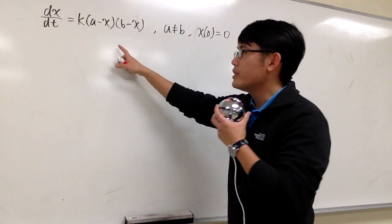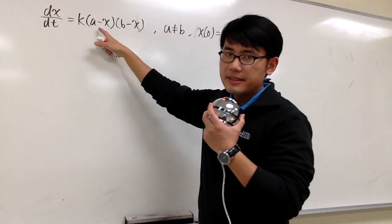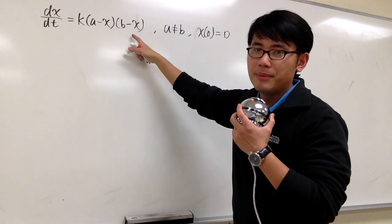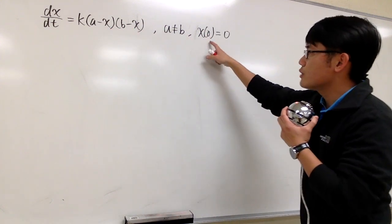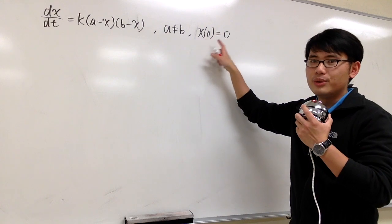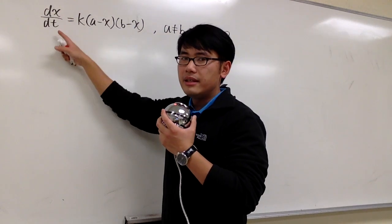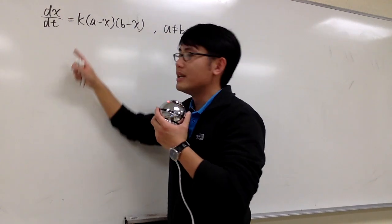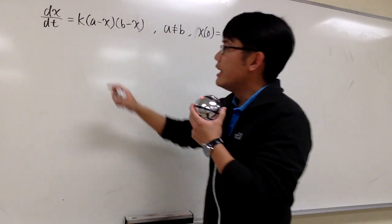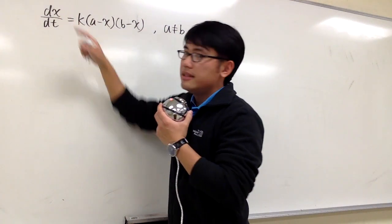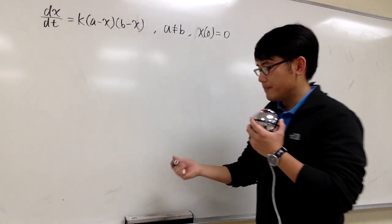We are going to solve this differential equation. We have dx/dt equals k times (a minus x) times (b minus x), where a and b are not the same, and we also have an initial condition: x(0) is equal to 0. Notice that x and t are the variables; a, b, and k are the constants. In our situation, x is the dependent variable and t is the independent variable.